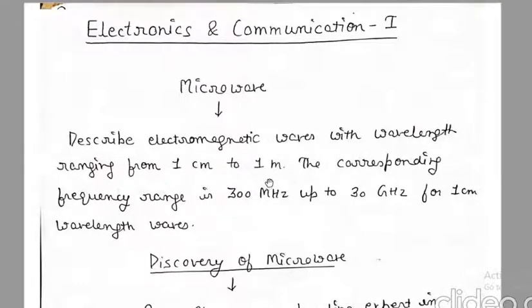Before moving forward, we will also talk about the discovery of microwaves — when and how it happened. First, James Clark Maxwell predicted microwaves in 1864 by his equations. Later, in 1888, Heinrich Hertz talked about their existence and developed a device by which microwaves were produced and microwave radiation could be detected.